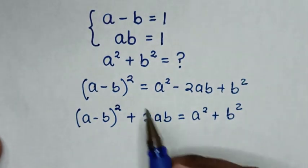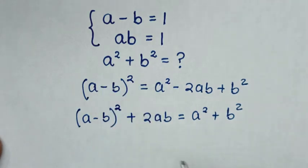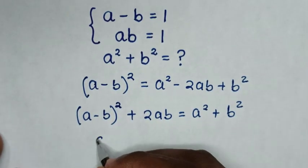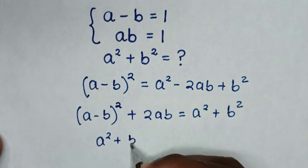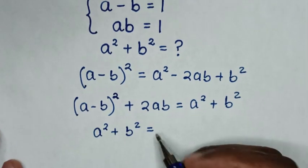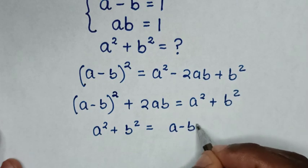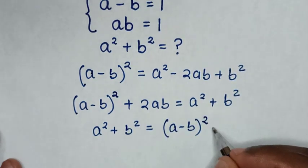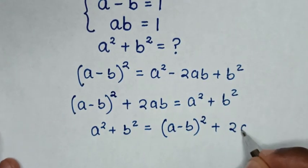we have A square plus B square, which we are asked in this problem. So from here, A square plus B square is equal to A minus B bracket square plus 2AB.